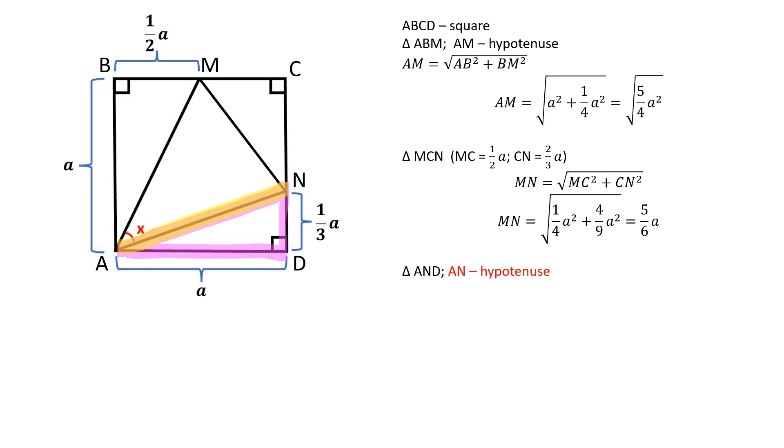In the triangle AND, AN is the hypotenuse. Again, we can find AN by using the Pythagorean theorem. AN is equal to square root of 10A squared over 9.